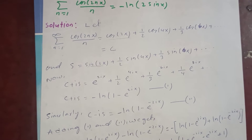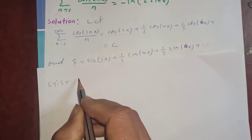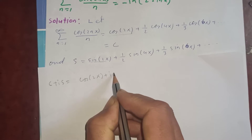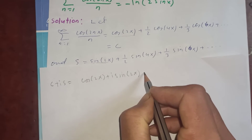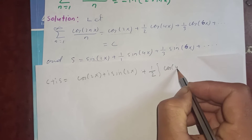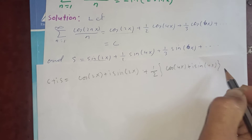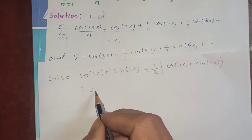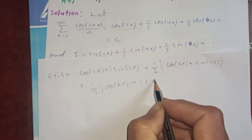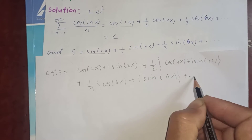I have skipped some steps, so C plus iS will have: the first term cos(2x) plus i·sin(2x), the second term is one-half times cos(4x) plus i·sin(4x), plus one-third times cos(6x) plus i·sin(6x), and so on.